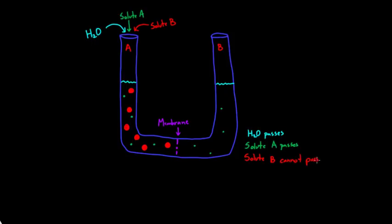Because it cannot pass, if you come back after letting this sit on the table for a little while, the level of water will rise on this side of the tube and will fall on this side of the tube. There becomes a real difference here between the two sides.